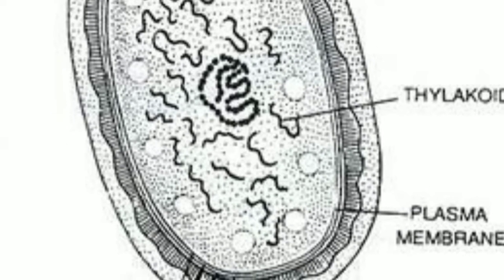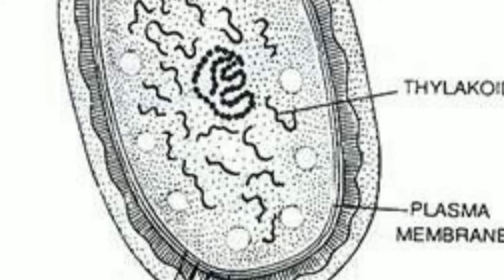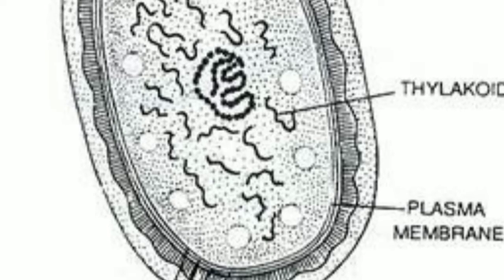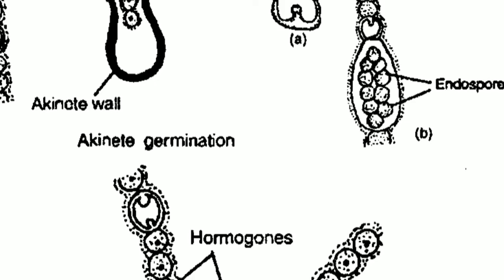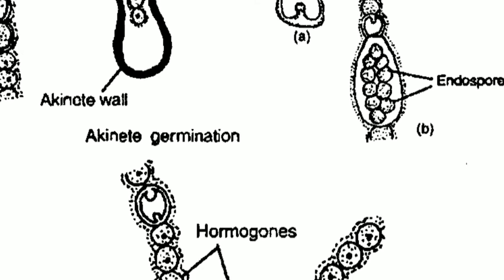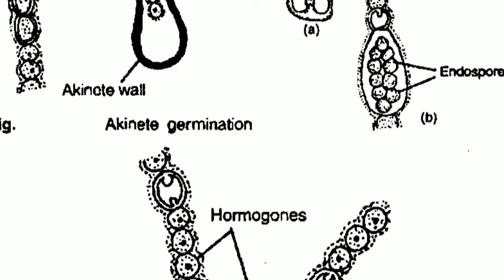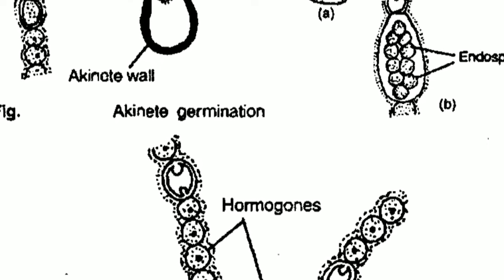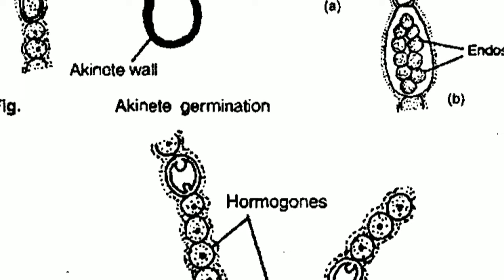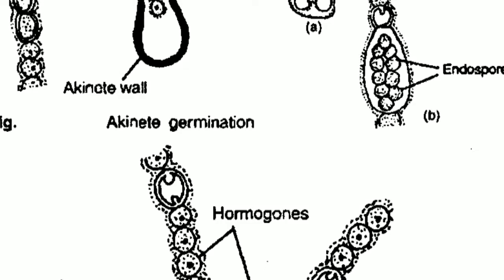Next structure is centroplasm. Central colorless region of cell is also known as centroplasm or nucleoplasm. This has naked DNA not associated with histones. In some cyanobacteria histone-like proteins bind specifically with DNA. Nuclear material not surrounded by nuclear membrane and nucleolus is also absent in cyanobacteria.